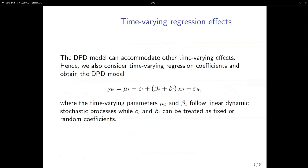Another extension: instead of only having a dynamic process for the intercept, the pooled beta can also be time-varying. The regression can have different impacts on different parts of the cross section. Each individual cross-sectional series can have their own beta_i, and also over time the regression can change. So we have beta_t and b_i in the same way as the intercepts, and the idea is to extract both mu_t and beta_t while still allowing for fixed effects like c_i, b_i, etc.